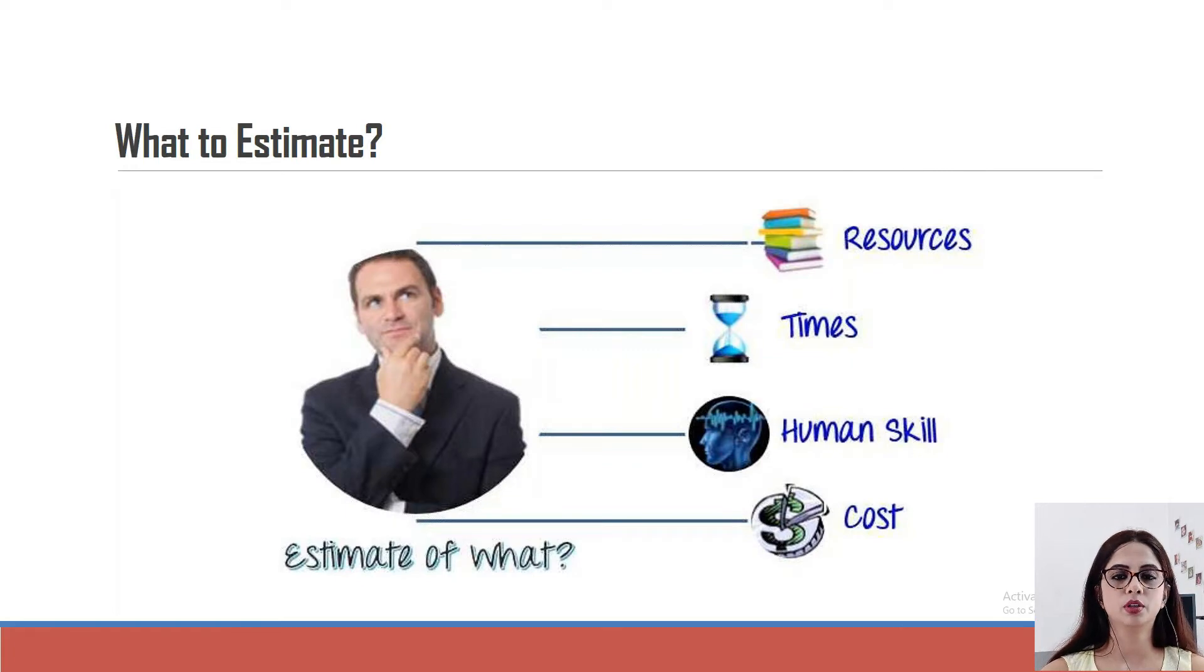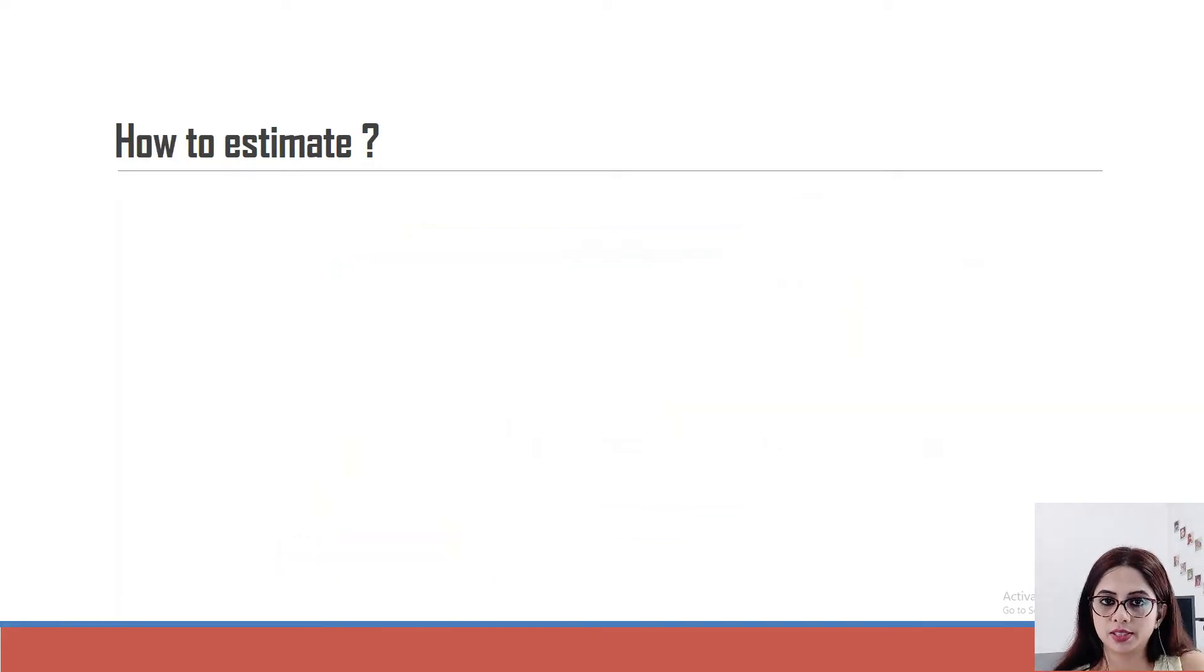Here we go - these are the pointers or criteria for estimation: the resources which we have in our team, the time which we have and how much time we would need, the human skills which we have, the technologies we have, and the costing. Now how do we estimate? What is the thought process or idea behind actually estimating?